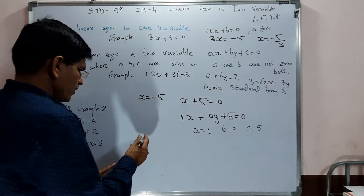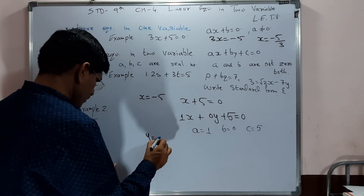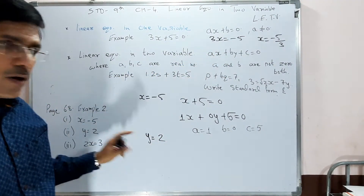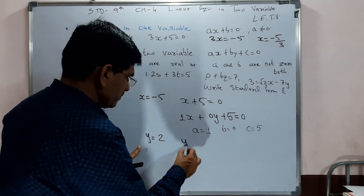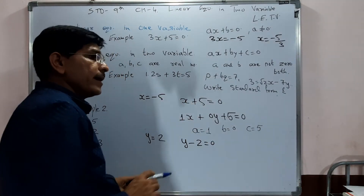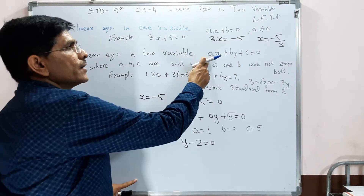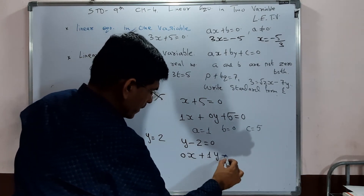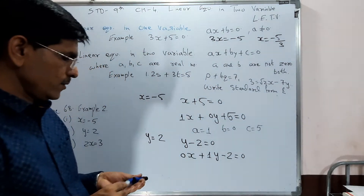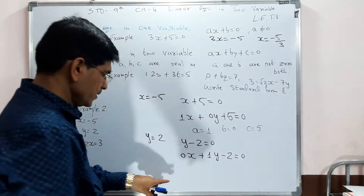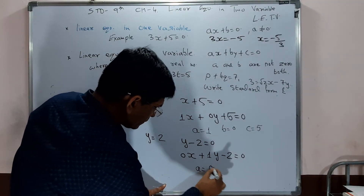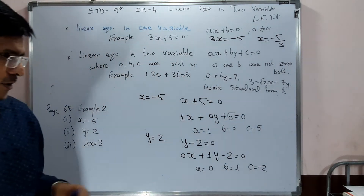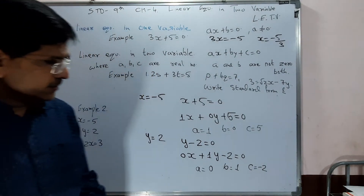Another question: y = 2. Here x is not given, so we write its coefficient as 0. Standard form: 0·x + 1·y - 2 = 0. So a = 0, b = 1, and c = -2.